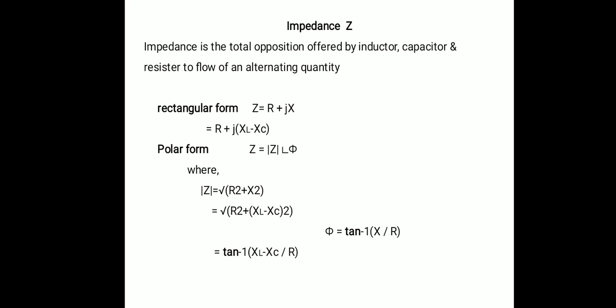The value of theta is equal to tan inverse of X by R, where X is replaced with XL minus XC. So theta equals tan inverse of (XL minus XC) upon R. By substituting mod of Z and theta into the polar form equation, we get the impedance in polar form.